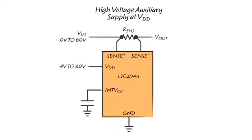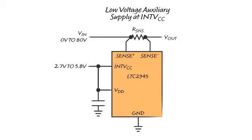A secondary high voltage supply can be connected directly to VDD, and the voltage measurement can be set to measure the Sense Plus pin. Another option is to connect a low voltage supply directly to the INTVCC pin, for example, the same supply as the microcontroller that is reading the LTC2945.